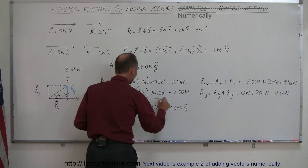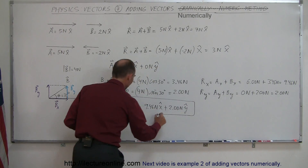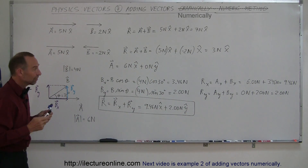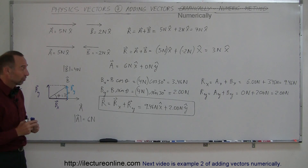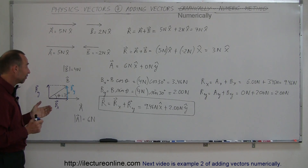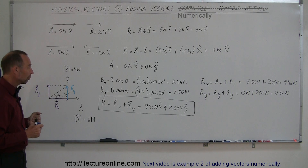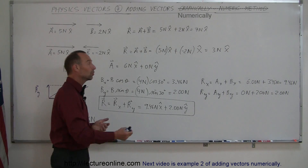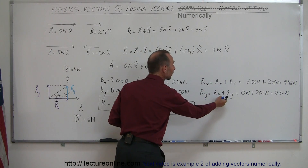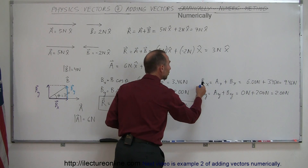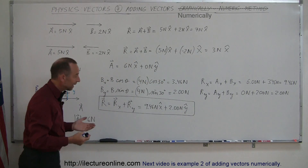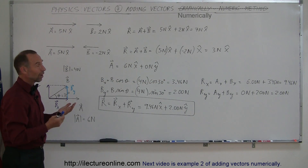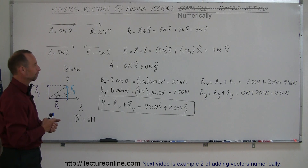This is how we add vectors together that do not point in the same direction or in opposite directions. You find the x and y components of each vector first, then add the x-components together, add the y-components together, get the x and y components of the resultant, and write it in vector format. And that's how you add vectors numerically.